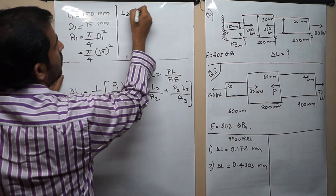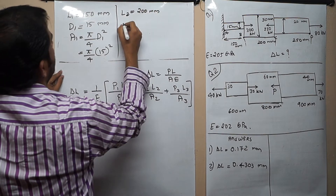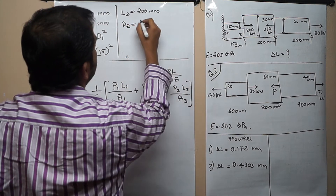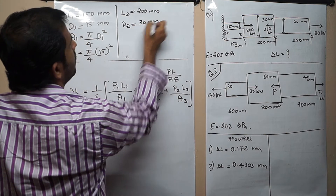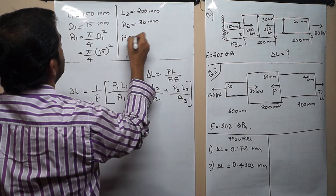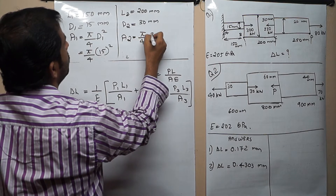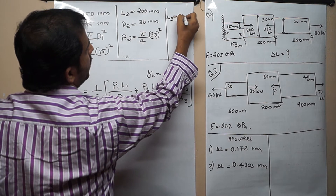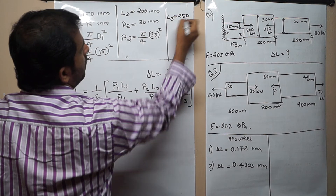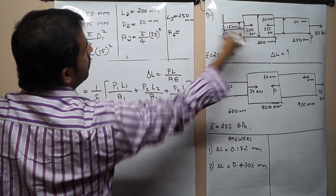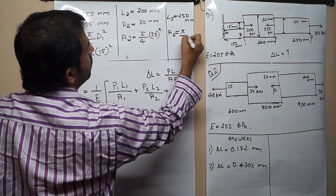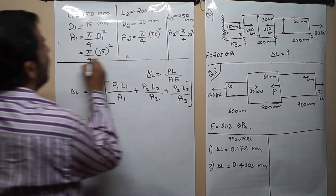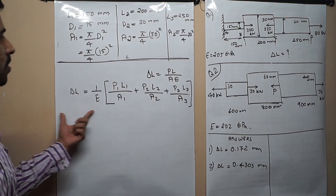L2 is equal to 200 mm. D2 is given as 30 mm, therefore A2 equals pi/4 times 30 squared. Similarly, L3 is given as 250 mm. D3 is 20 mm, so A3 equals pi/4 times 20 squared. From the superposition principle we have this equation, and all the values are known to us — E, A1, L1, A2, L2, A3, and L3.